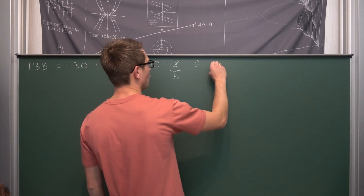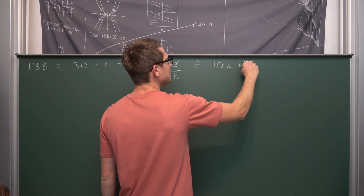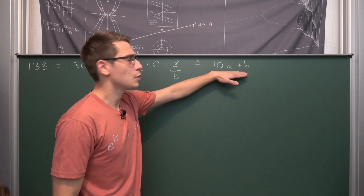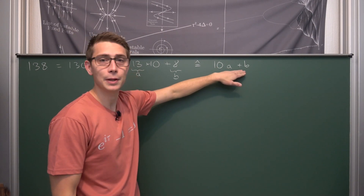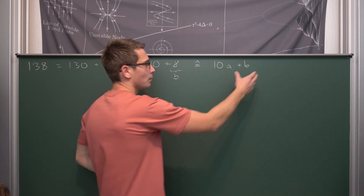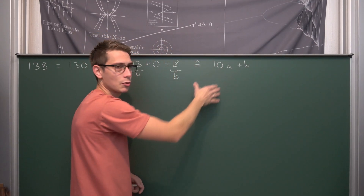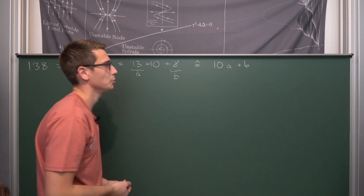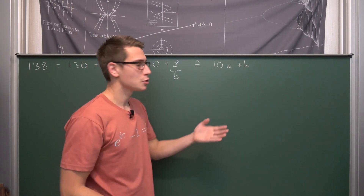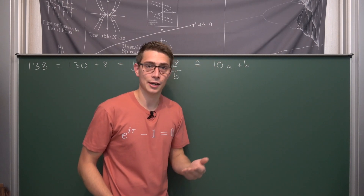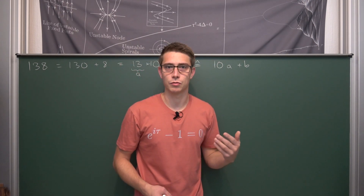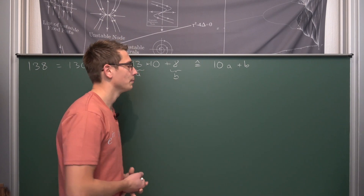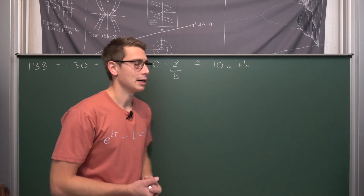Meaning we can generalize our problem of divisibility by 69 into the following: we are going to see if a number of the form 10A plus B is divisible by 69. What we are going to do now is algebraically manipulate this expression into something which is partly divisible by 69, and the other part is going to be defined recursively to see if it is also divisible by 69 overall. There should be infinitely many divisibility rules for every natural number.